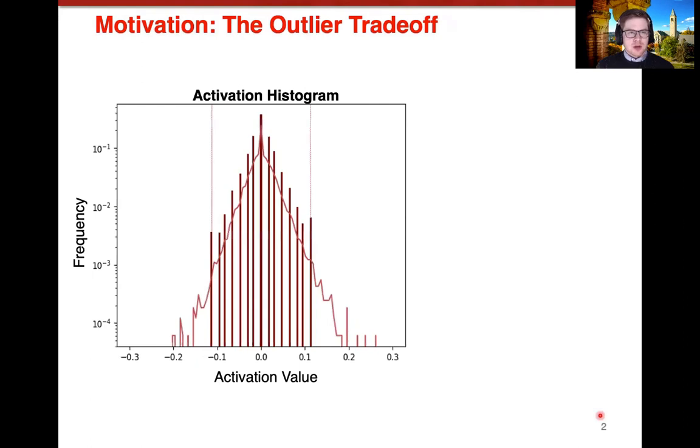I want to motivate it by talking about the outlier trade-off with linear quantizers. This is a histogram of activations taken from an arbitrary layer of ResNet-18, and these activations are before ReLU because they're both negative and positive. The jagged line here represents the histogram of floating point values before quantization, and then the spiked lines here are the quantization points after quantization.